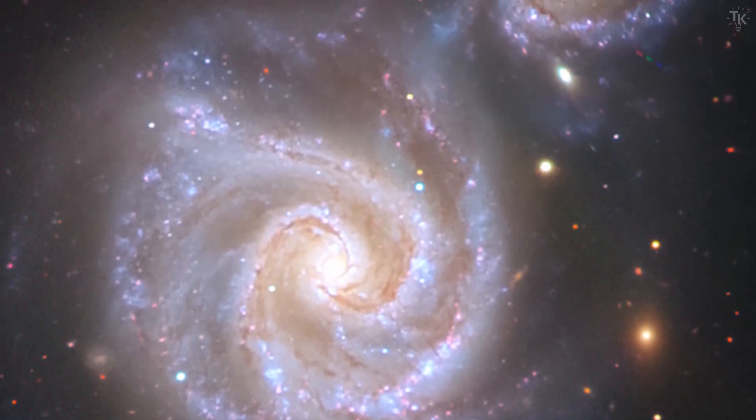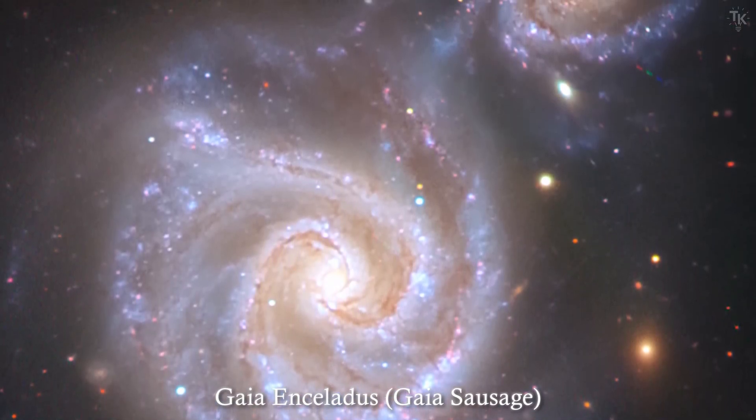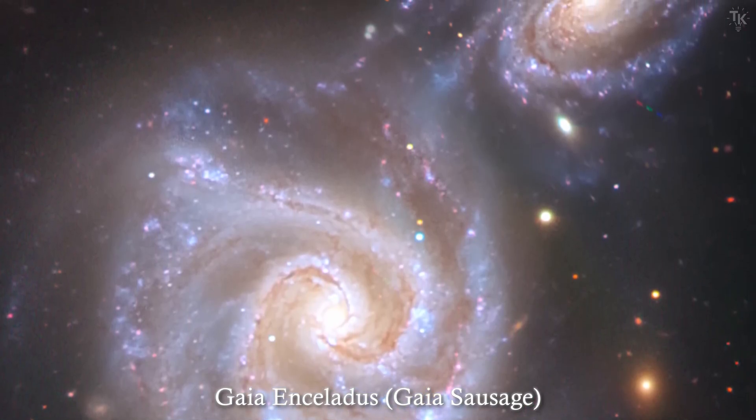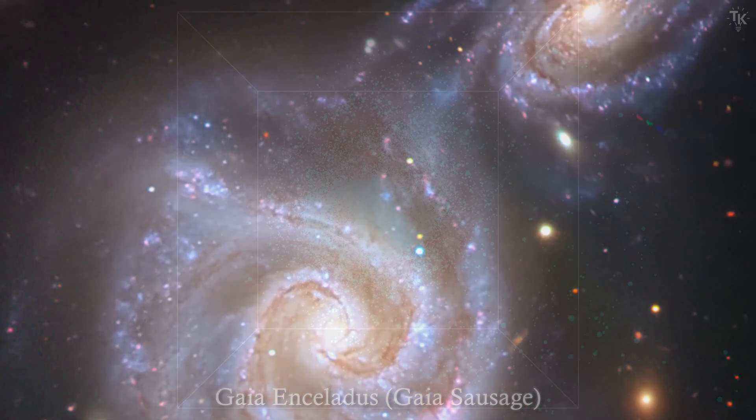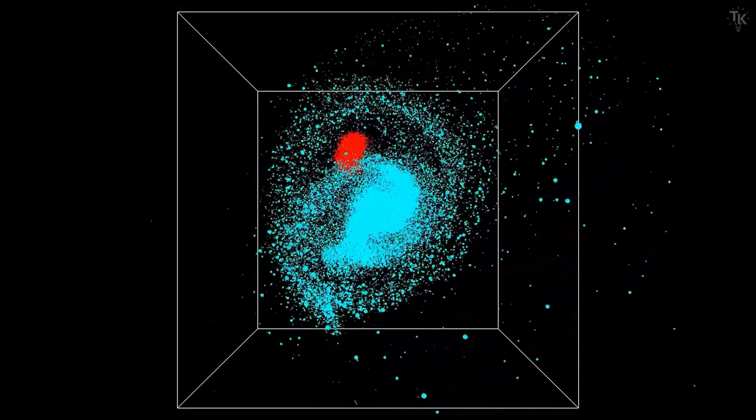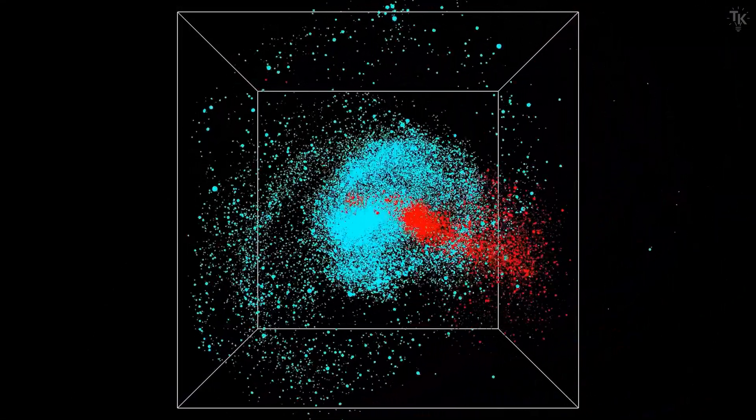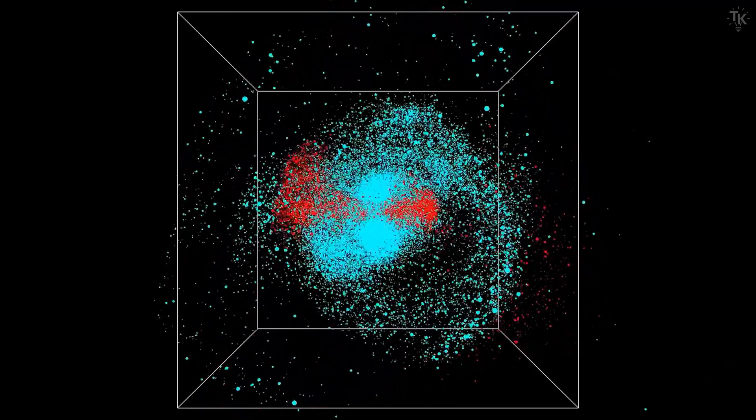That galaxy is called Gaia Enceladus. The collision took place more than 10 billion years ago. Its mass was about one-tenth that of the Milky Way. Gaia Enceladus approached the Milky Way, collided, passed through several times while being torn apart, and was ultimately absorbed.